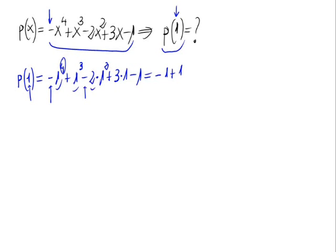Plus 1 cubed, that is 1. Now, minus 2 times 1 squared is minus 2, plus 3 times 1 is 3, I'm sorry, minus 1.